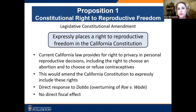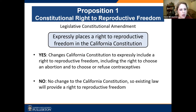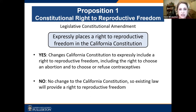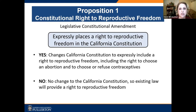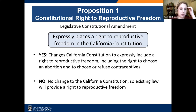A yes vote would change the California constitution to expressly include a right to reproductive freedom, including the right to choose an abortion and to choose or refuse contraceptives. A no vote means no change to the constitution — existing law will still provide a right to reproductive freedom, but it's not actually in the state constitution. I like to look at what different groups say. The League of Women Voters said yes on this one — they do believe in reproductive freedom and support it.